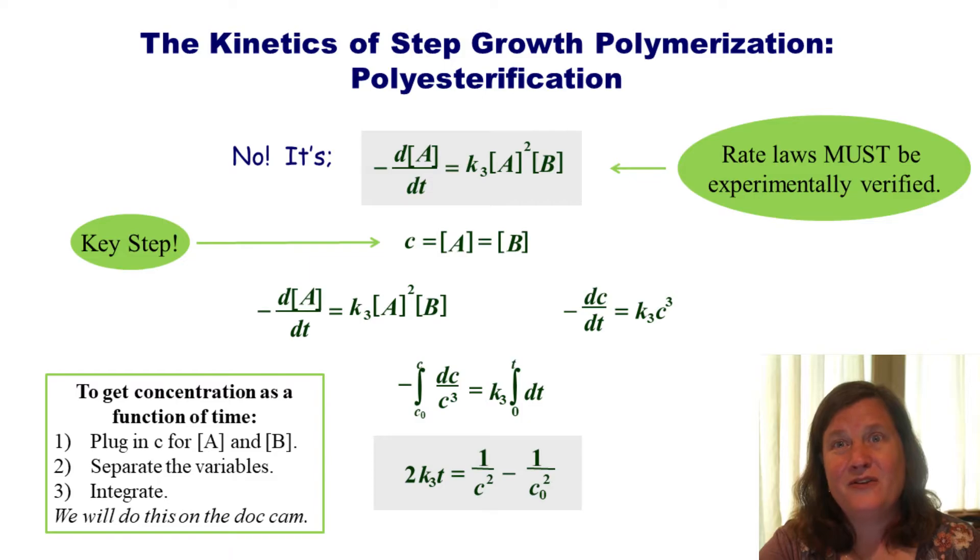Now we're going to get to our second key assumption, and if we don't remember to do this step, we cannot solve this rate law. Because the acid concentration and the alcohol concentration to get the highest molecular weight polymers has to be exactly equal. So we know that at t equals zero, when we start, the concentration of acid groups has to equal the concentration of alcohol groups. Now, every time I react an acid group, I react an alcohol. So as a function of time, these concentrations also stay the same. So we can now set the concentration of acid groups equal to the concentration of alcohol groups. So we just use the letter C.